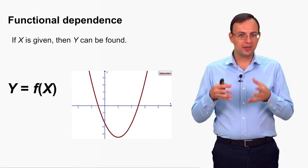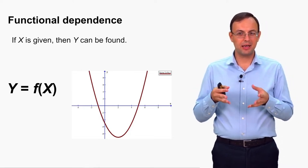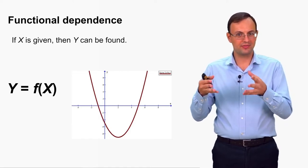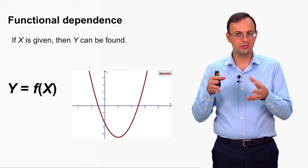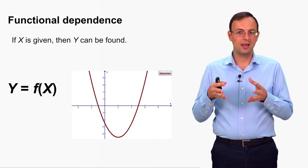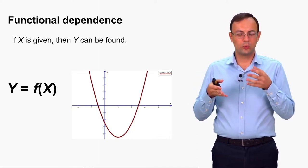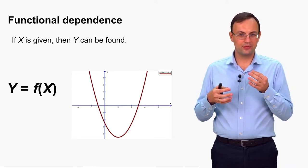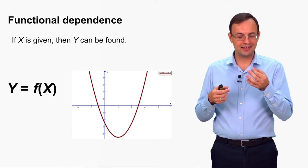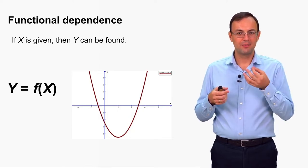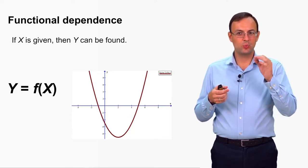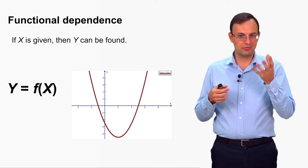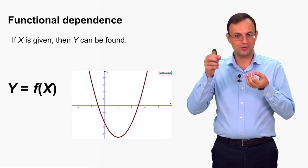This type of dependence can be described as a curve. We can plot this function y = f(x). When we see this curve, it means that if x is given, we can find y as the respective point on this curve.